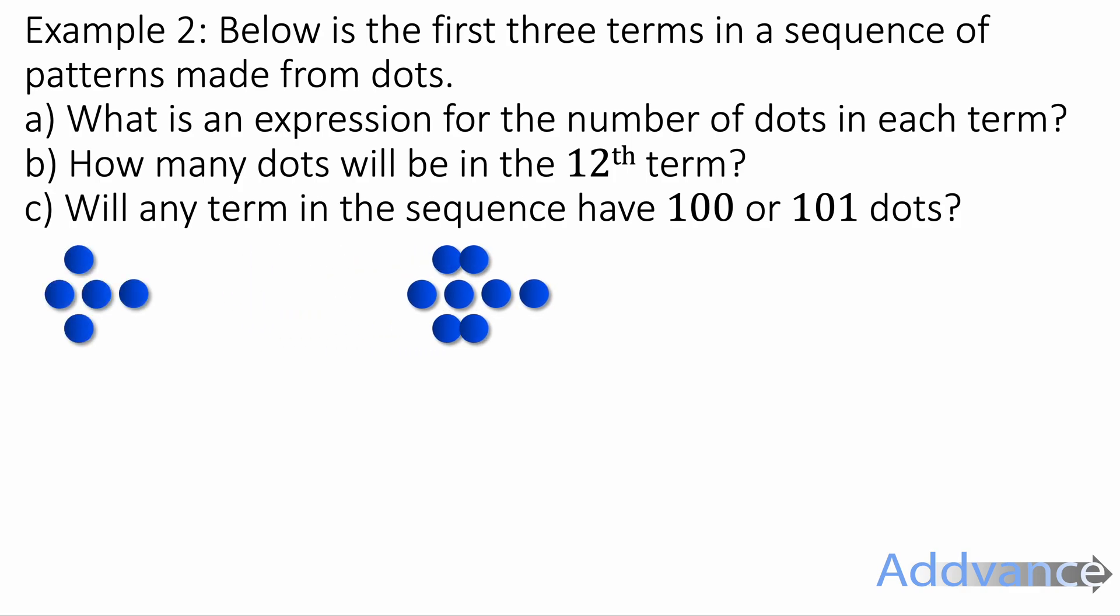Example 2, we've got the dots below making a sequence of patterns from dots. What is an expression for the number of dots in each term? How many dots will be in the 12th term? And will any term in the sequence have 100 or 101 dots? There's 5 dots in the first one, 8 dots in the second one, and 11 dots in the third one. And it continues going like that. I've just been counting the number of dots in each sequence.